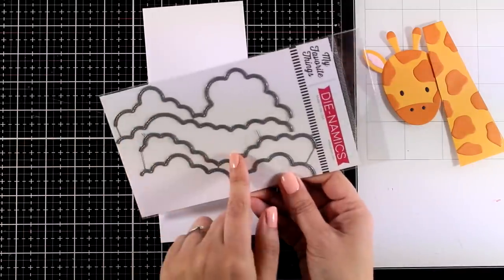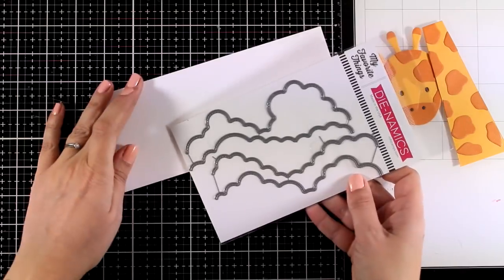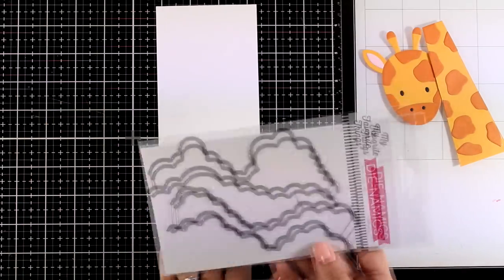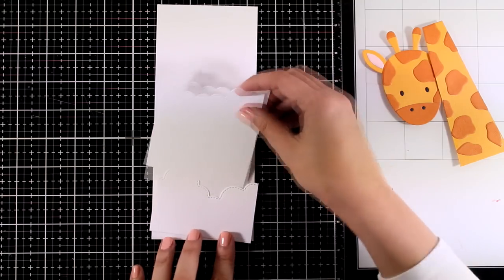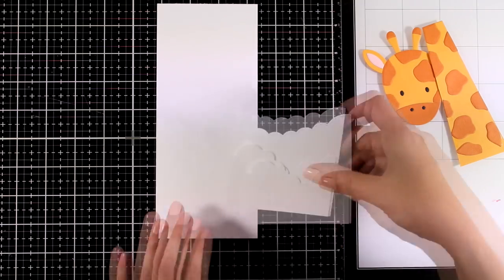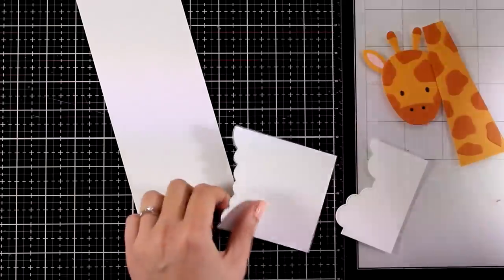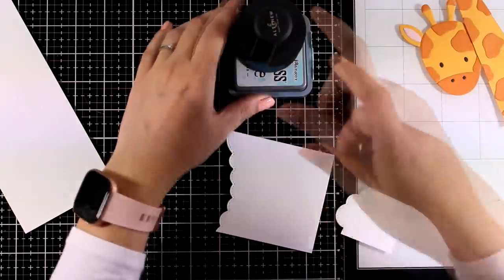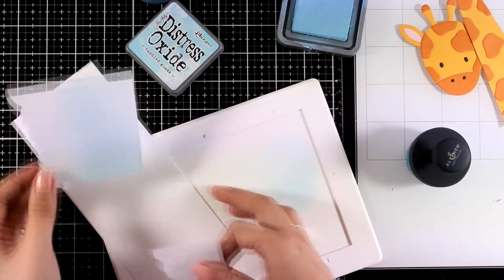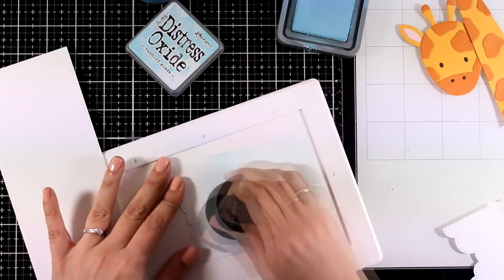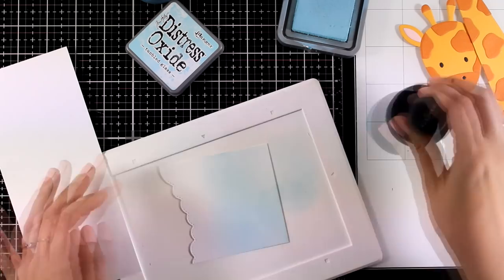For that I decided to go with the stitched rolling clouds edges. These are designed to work on an A2 standard card size. However you will see that I'm going to use them today on both my cards in both portrait and landscape orientation of slimline cards. Since I'm working white on white I want to help those clouds pop a little bit once I place one on top of the other.